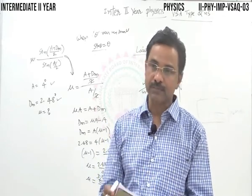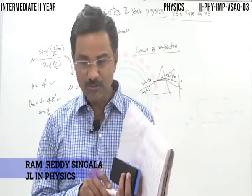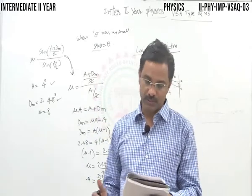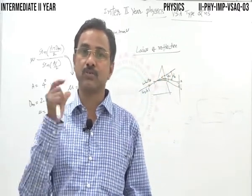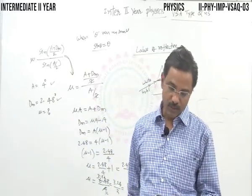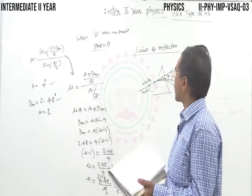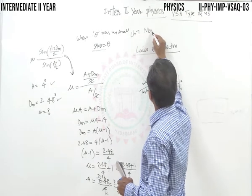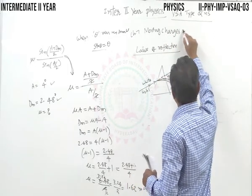That is about ray optics. We will now focus on very short answer questions for Chapter 7 — moving charges and magnetism — which also has a 2-marks weightage in the IP examination.